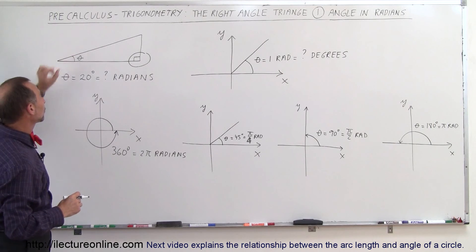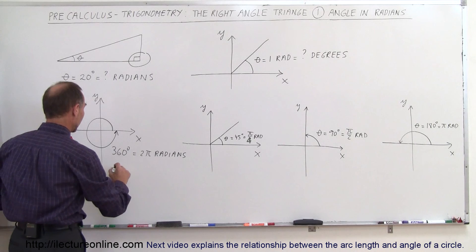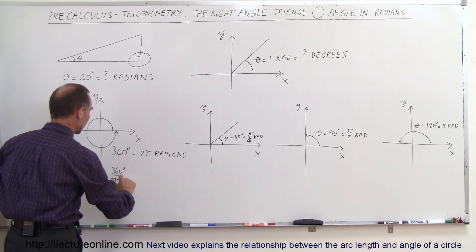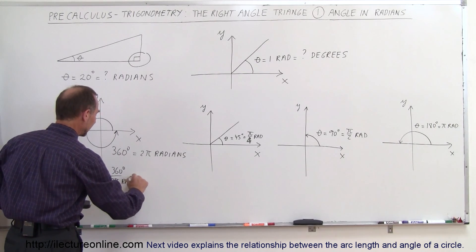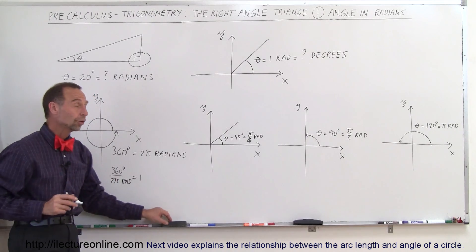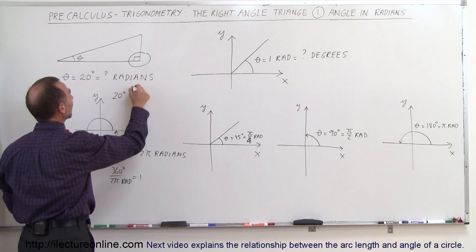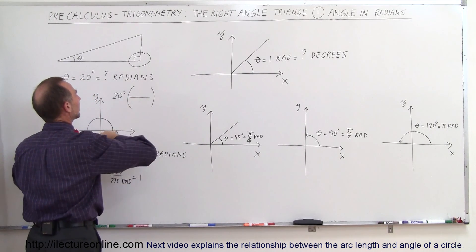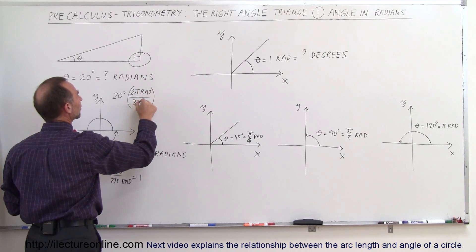If we have an angle of about 20 degrees, what would that be in radians? The relationship is that 360 degrees divided by 2π radians equals 1 — that's the ratio. To convert from degrees to radians, we take 20 degrees and multiply by 2π radians divided by 360 degrees.